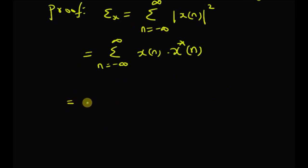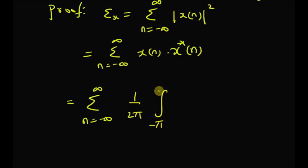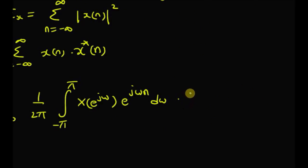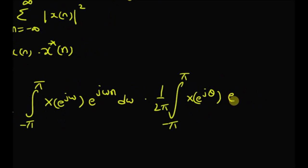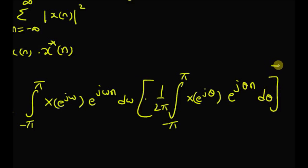Now by using the definition of the inverse DTFT, we can rewrite x of n as 1 by 2 pi, integral from minus pi to plus pi, of x of e to the power j omega — that is its DTFT — multiplied by e to the power j omega n, d omega. And then we have 1 by 2 pi, integral from minus pi to plus pi, of x of e to the power j theta, e to the power j theta n, d theta, and we have a conjugate for the whole integral.